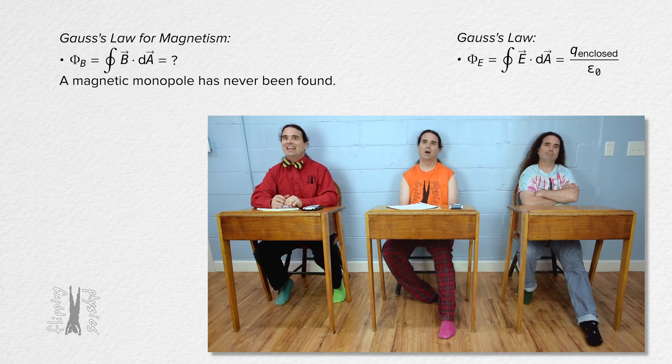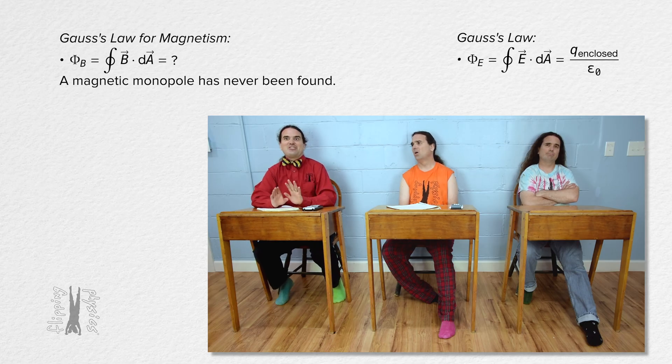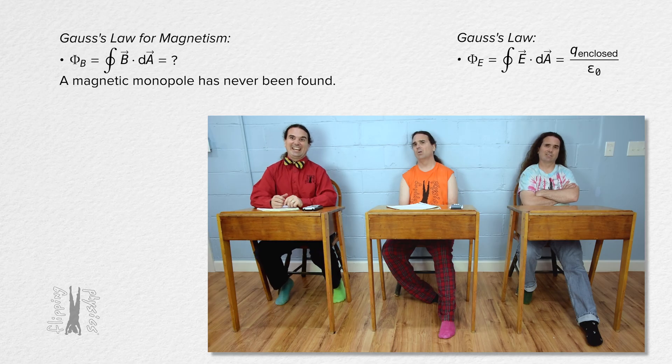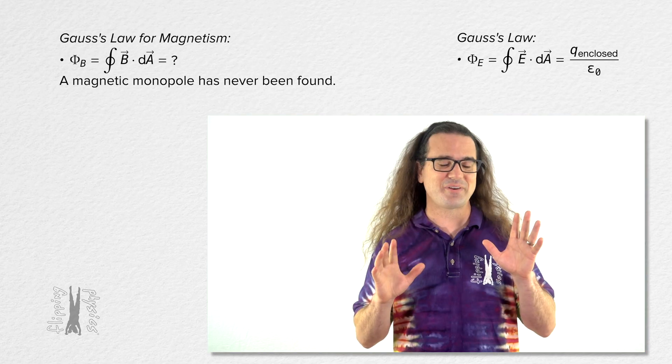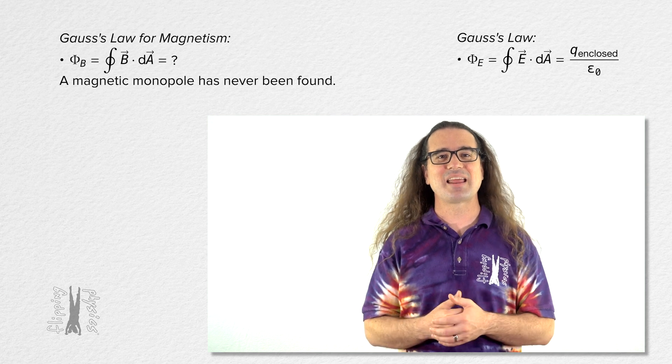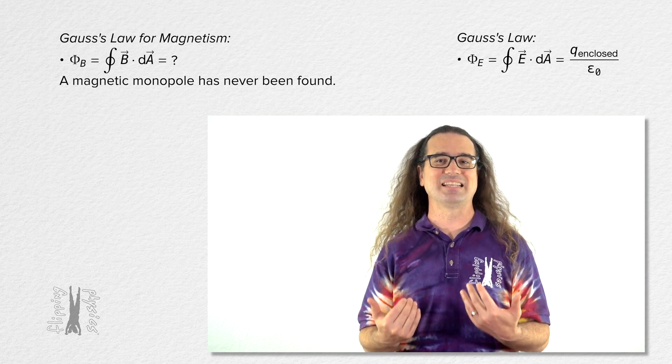Hence, someday if we find a magnetic monopole, it will throw into question everything we use to describe how our universe works. A bit dramatic, but yes, it is true that magnetic monopoles have never been found in nature.